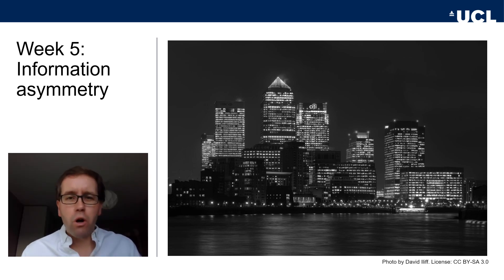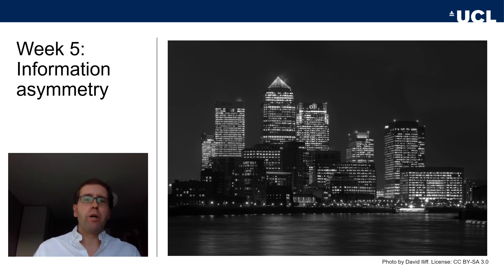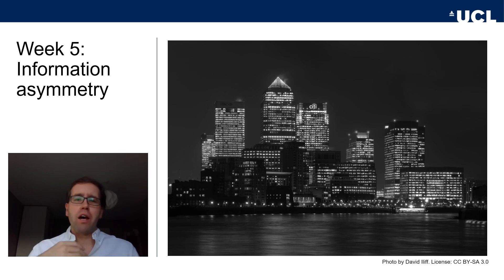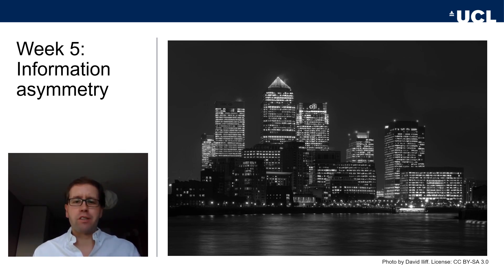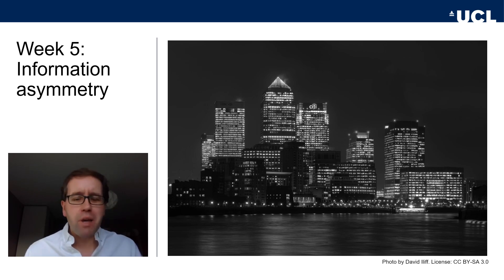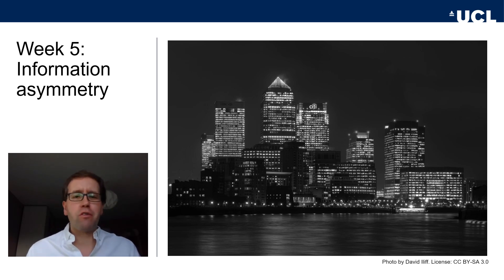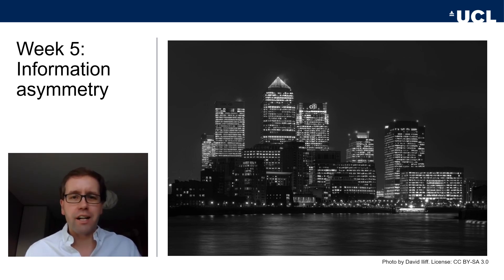What happened when the whole house of cards came crashing down? Well, we all learned about systemic risk. What happened when Lehman Brothers went bankrupt, for example, was that the fear was there would be a cascade of banks going to the brink of bankruptcy because of all these toxic assets on their balance sheets.